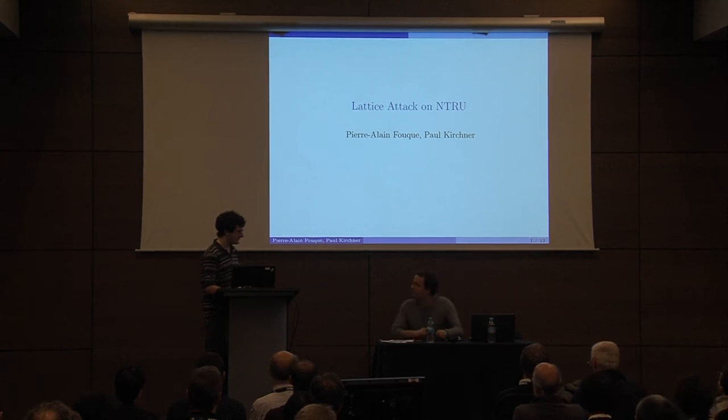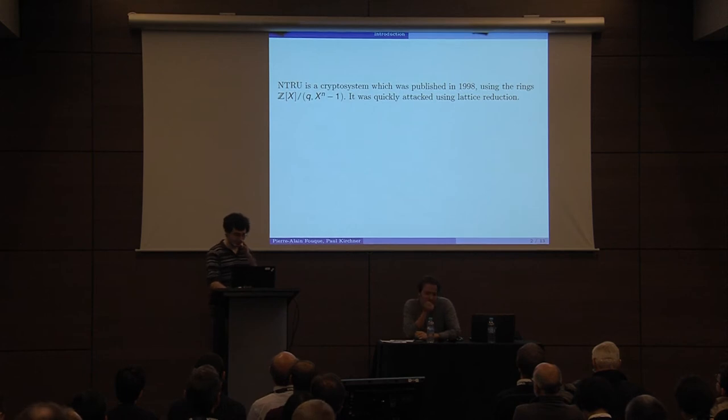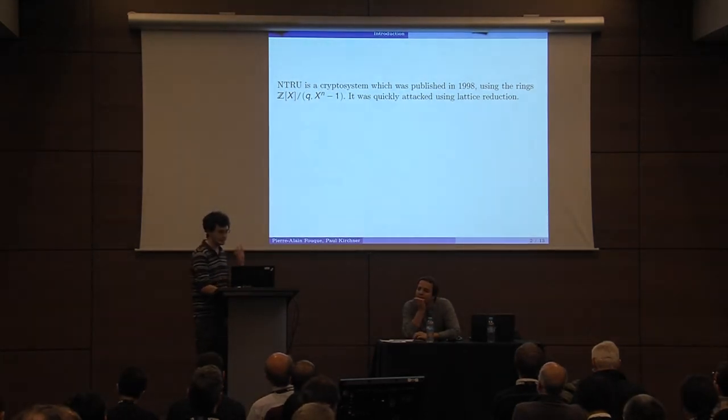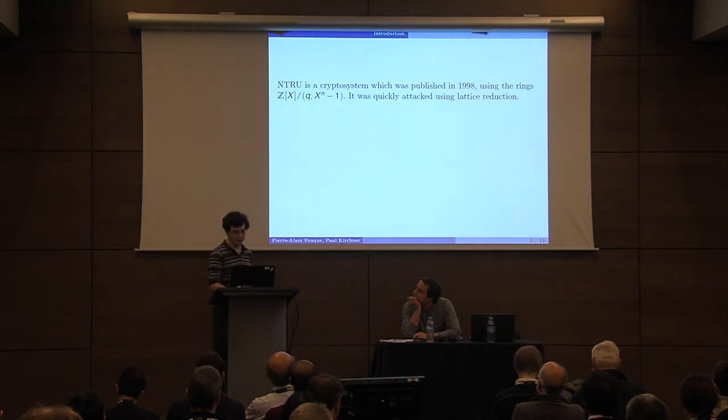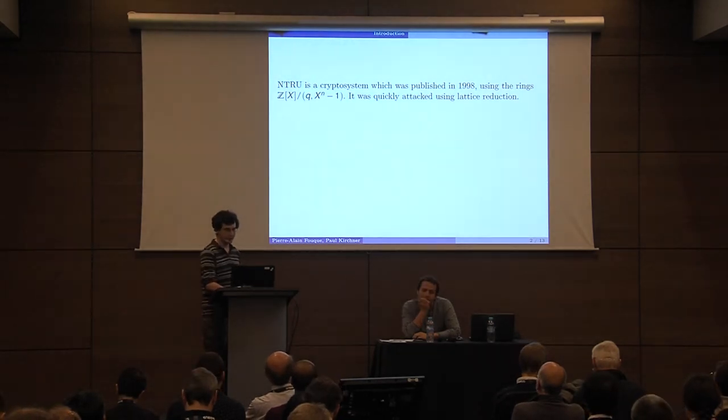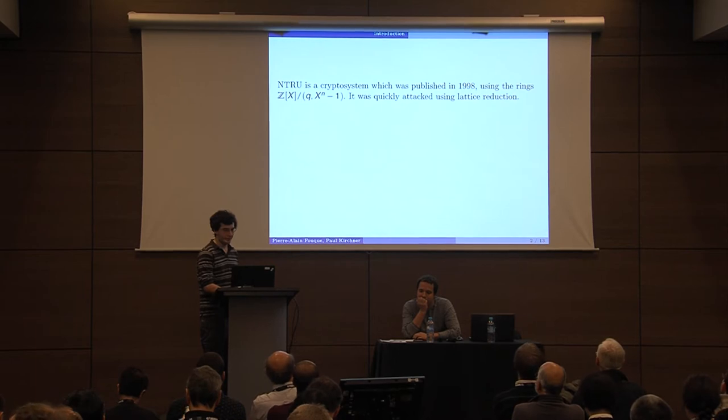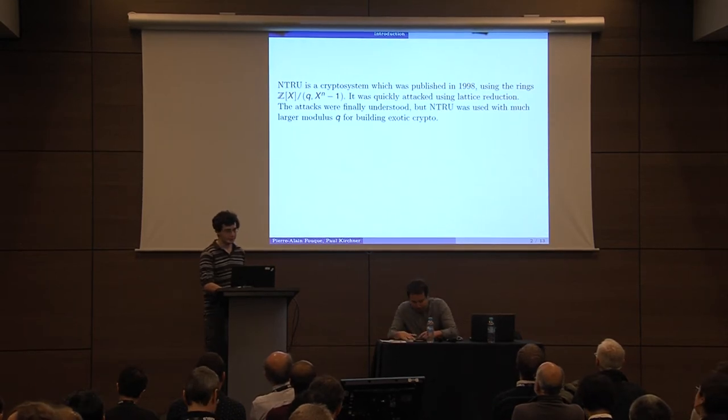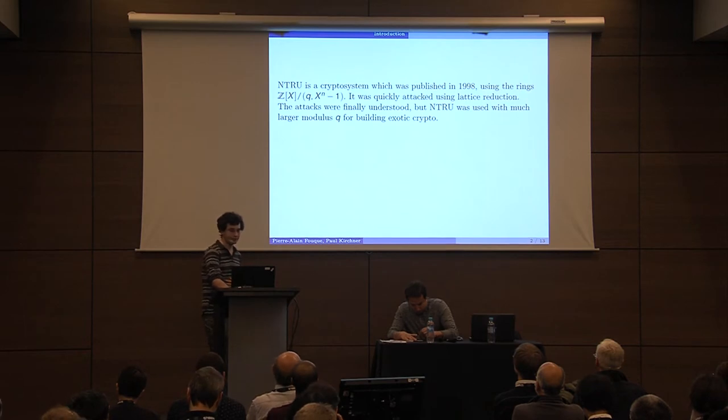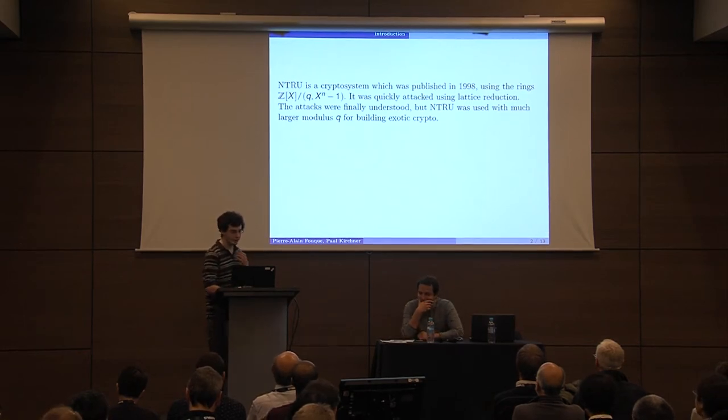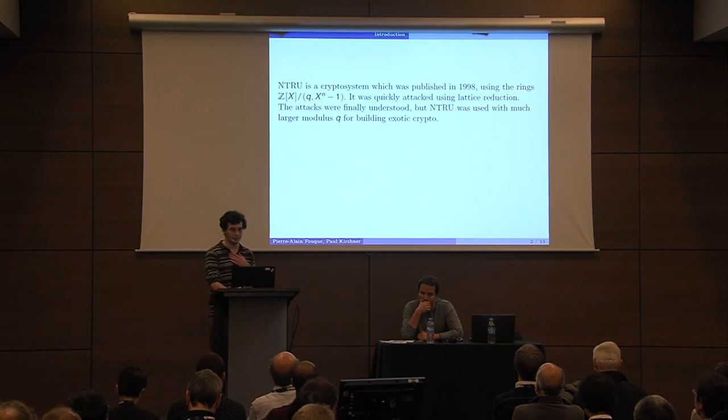Thank you, Leo. NTRU is a cryptosystem which was published in 1998 and it uses some rings, essentially a cyclotomic ring. It was quickly attacked later using lattice reduction, and after the attacks were finally understood, NTRU was used with much larger ring modules for building some more exotic crypto.